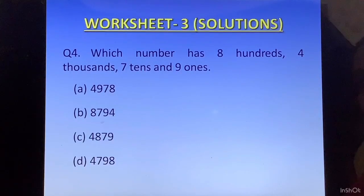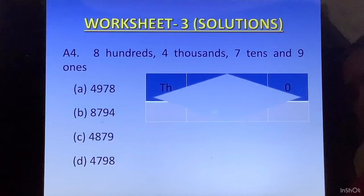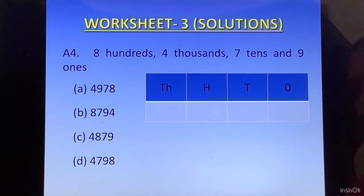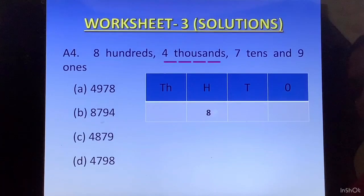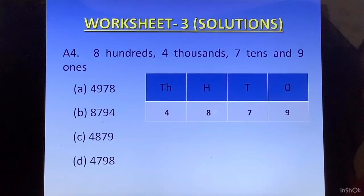Question 4: Which number has 8 hundreds, 4 thousands, 7 tens, and 9 ones? There are 4 options. Let us make a number from the given values using a place value table. We write 8 under hundreds, 4 under thousands, 7 under tens, and 9 under ones. So the number should be 4, 8, 7, 9.